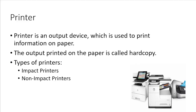Next is the printer. A printer is the most commonly used output device and is used to print documents on paper. The output printed on the paper is called hard copy. Printers are classified into two types: impact printer and non-impact printer.